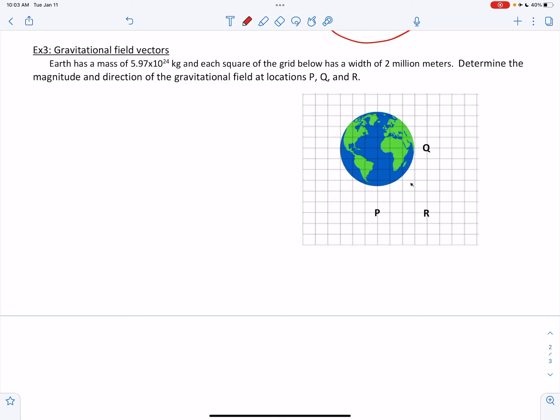Alright, finishing up here with example three. This is going to be the most complicated of the examples, so hang in here with me. Earth has a mass of 5.97 times 10 to the 24 kilograms, and each square of the grid below has a width of 2 million meters.